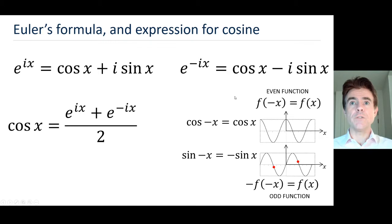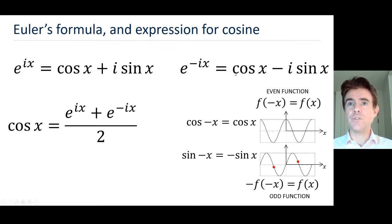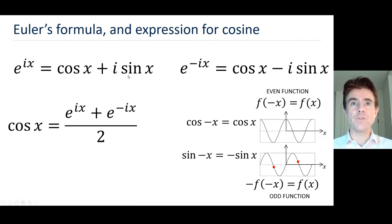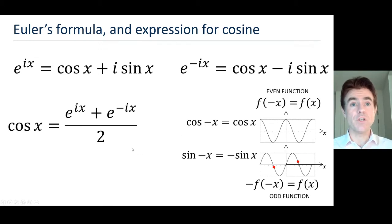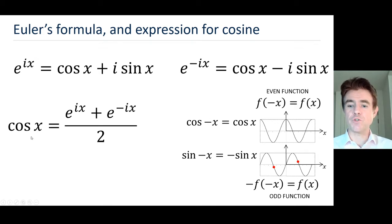Therefore, if we add the expression for e to the ix to the expression for e to the minus ix, the two cosine terms combine to give 2 cos x. Then the sine terms — the imaginary parts — completely cancel each other out. So we're left with 2 cos x, and we divide by 2 to get the expression for cos x.